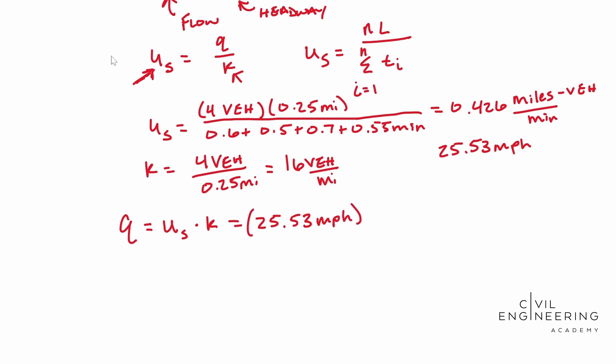And so this guy ends up being 25.53 miles per hour. And we're going to multiply that by that 16 vehicles per mile. And we noticed that units kind of cancel out here and we should end up with 408.48 vehicles per hour.